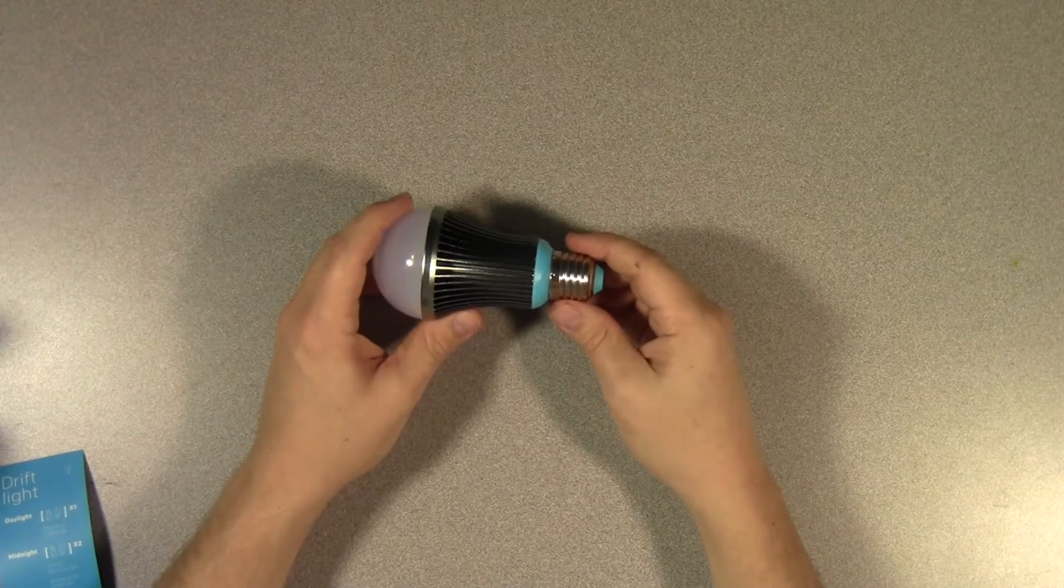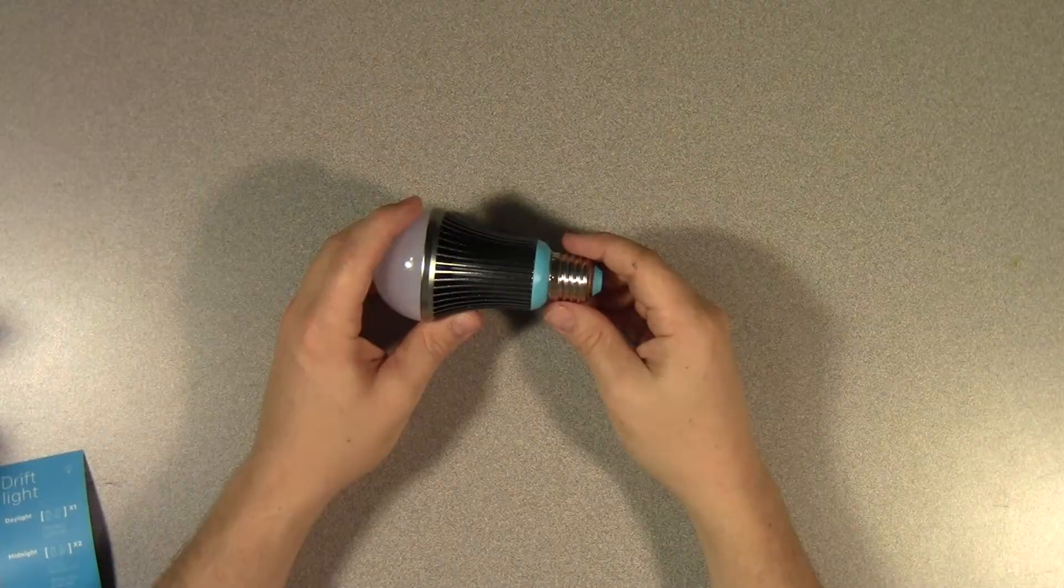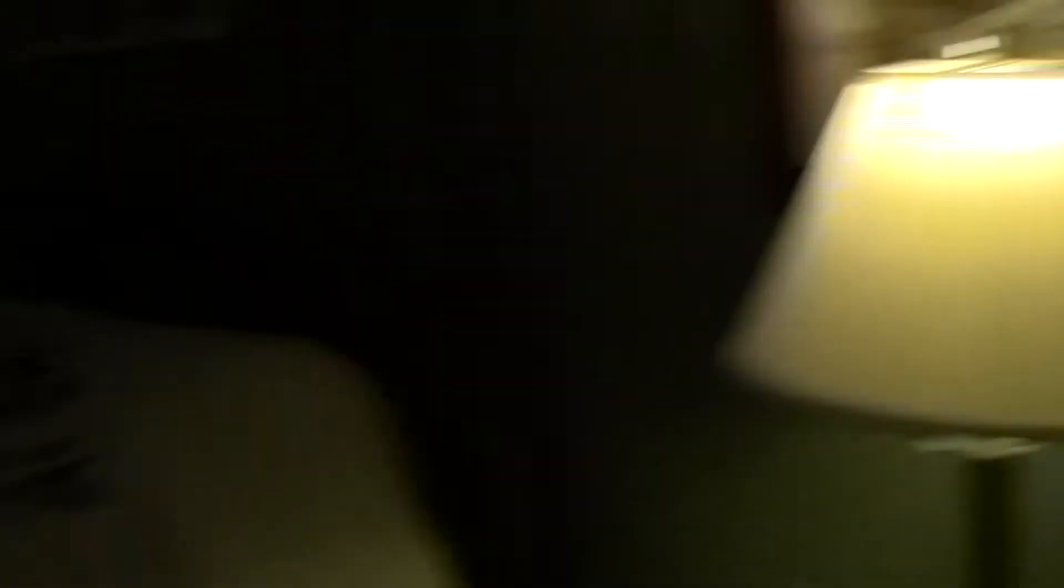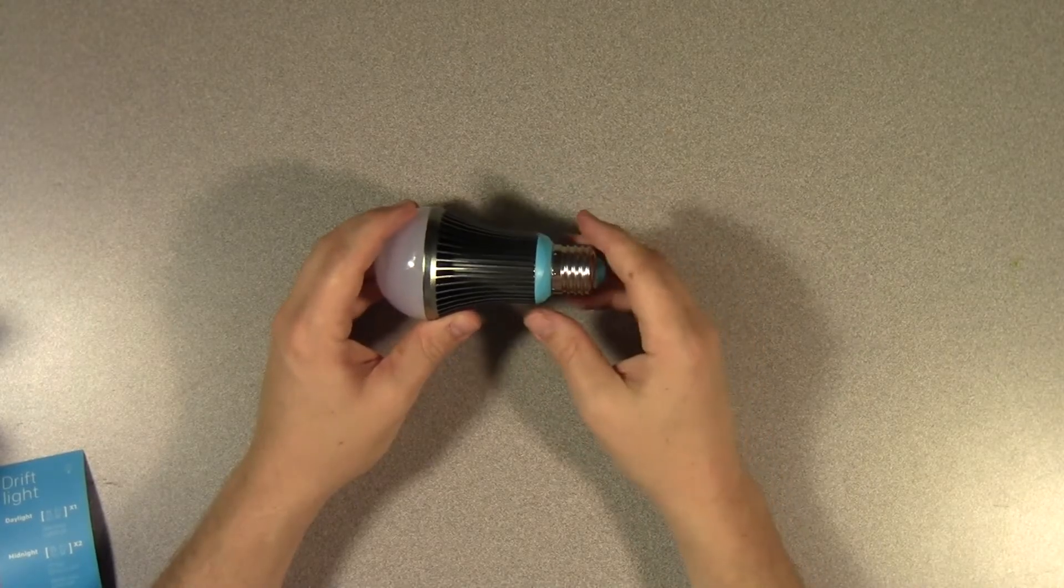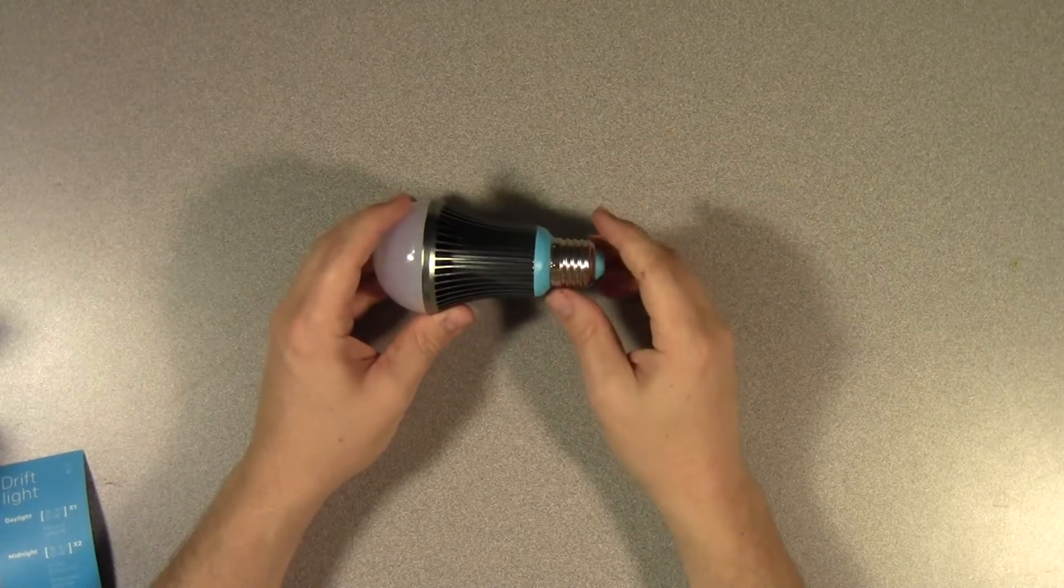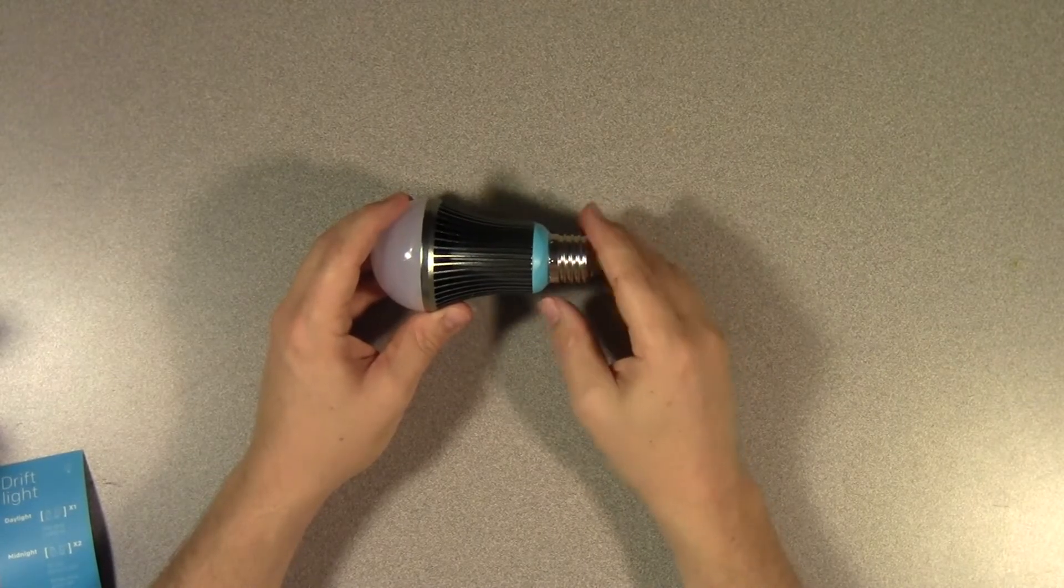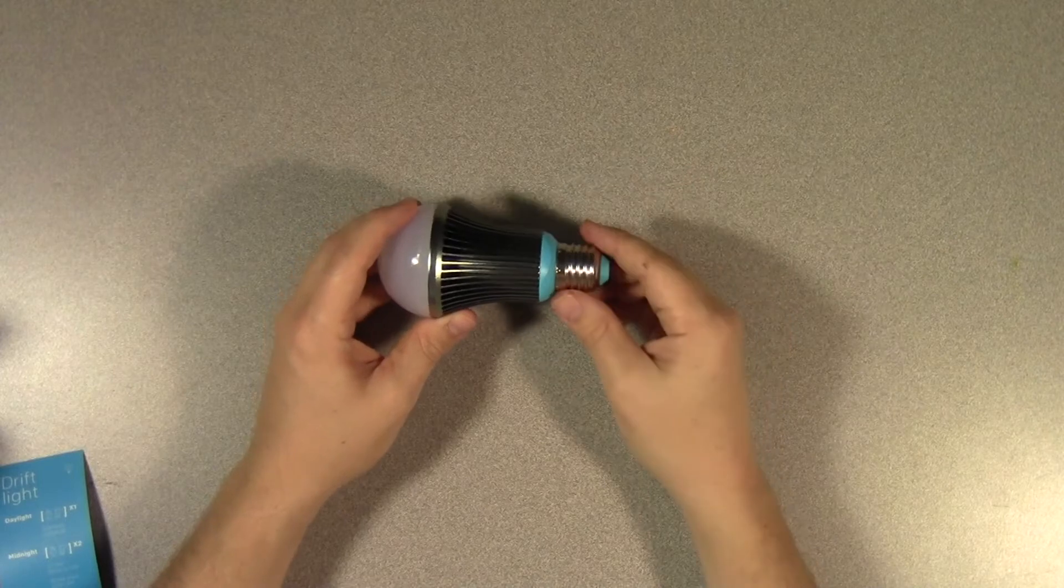But instead of turning the light switch on, if you turn it on, then off, and then on again, this bulb will light up but it flickers to indicate that it's in what's called midnight mode. And what that means is that over the next 37 minutes, this bulb is going to slowly dim down to the place where it will finally turn off about 37 minutes later.